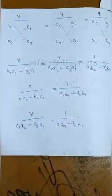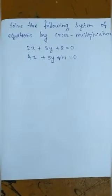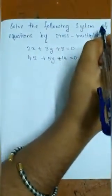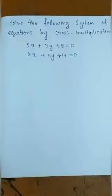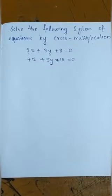This method is easy if you have listened carefully. We only start with the coefficient of y and end with the coefficient of y. For more clarification and better understanding, let's do a mathematical problem. I'll give you a question so you will understand more clearly and be able to solve problems accurately. The question is: solve the following system of equations by cross multiplication.